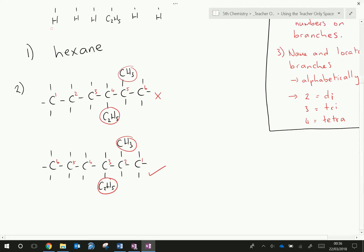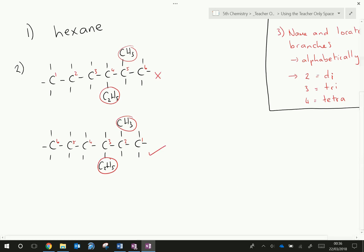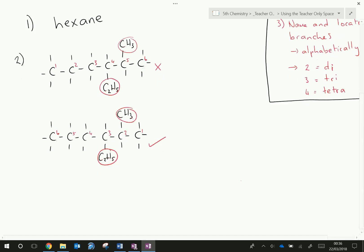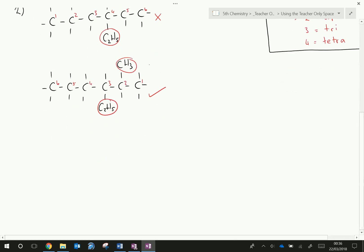So I have everything numbered. Step 3 is name and locate your branches. So I have my branches already marked off here. So the top one there is a methyl group because it has one carbon. And I have another group down here that contains two carbons. And because it's two carbons, we call that group an ethyl group, ethyl for two carbons.